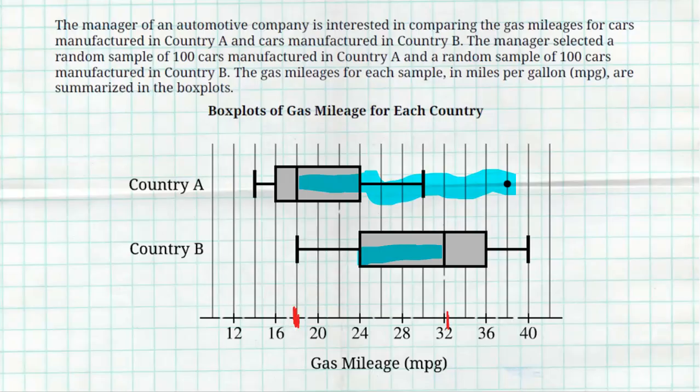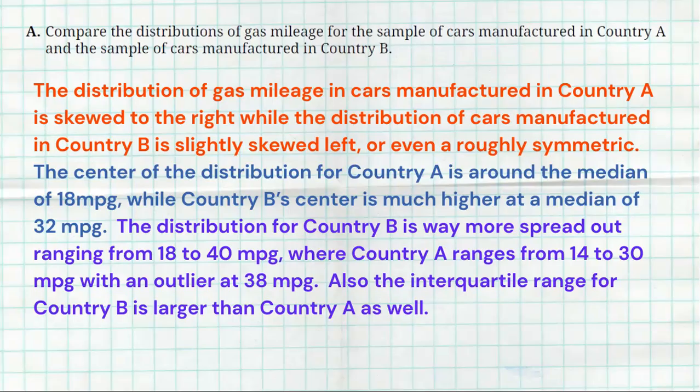But, you know, oftentimes when we talk about spread, the outlier makes the range look way, way wider than it is, which is why it's better if we actually look at the IQRs, and the IQR for Country B is also more spread out than Country A, and that's pretty obvious to see as well. So you want to make sure you mention all those things, and of course, mentioning the outlier for Country A, that Country B does not have any outliers. So overall, not too bad of a question.